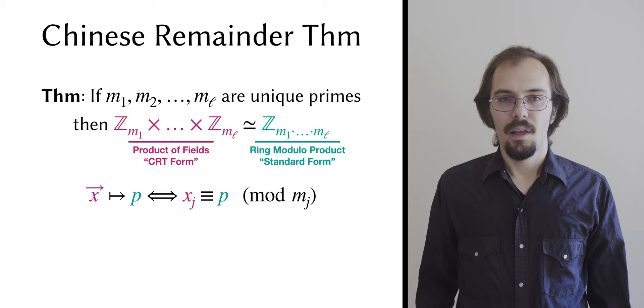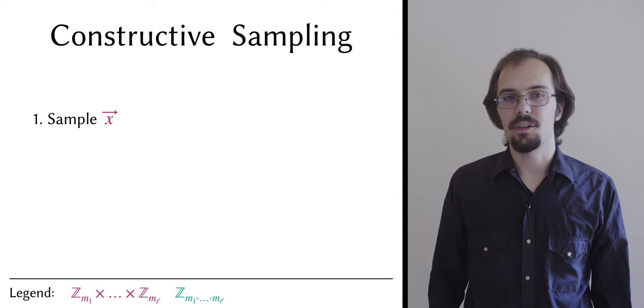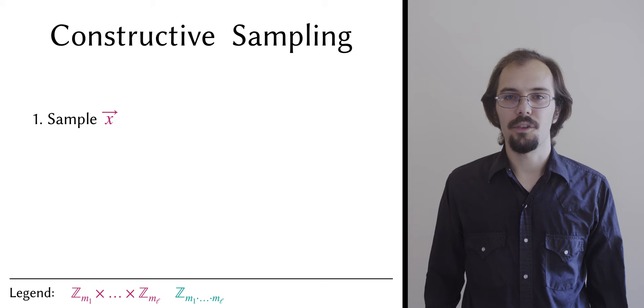Thus, we sample probable primes without trial division. We call this constructive sampling. If we had only one party, our sampling algorithm would be simple. Choose a CRT form value randomly, test to make sure all of its elements are non-zero, then find the corresponding standard form value and interpret it as an integer, which is our candidate prime p.